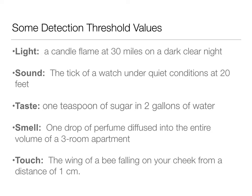For touch, we're really sensitive - a wing of a bee falling on your cheek from a distance of one centimeter, something very light falling not very far at all. Your cheek is a very sensitive area because it's on your face, so that wouldn't necessarily be the same as a different part of your body, but on your face you have very sensitive receptors.